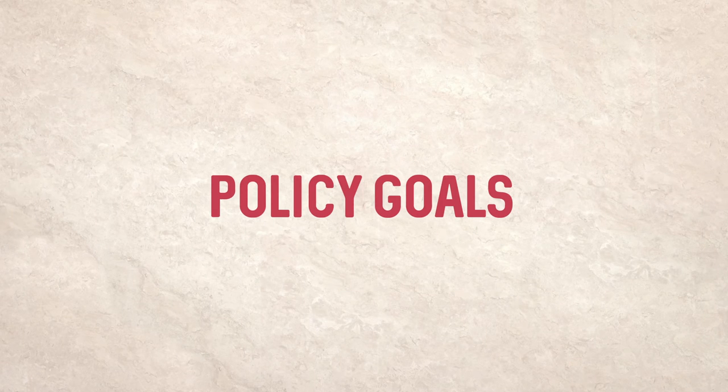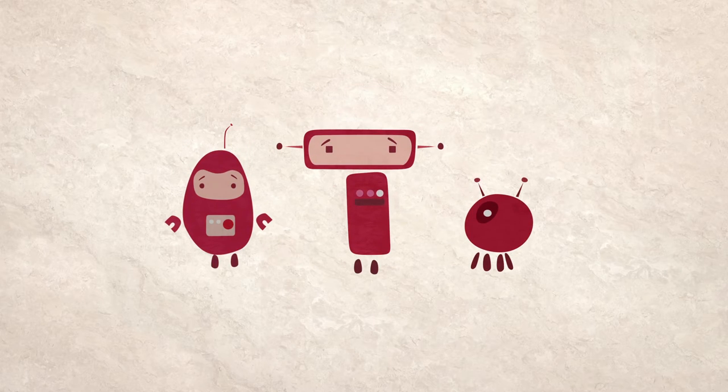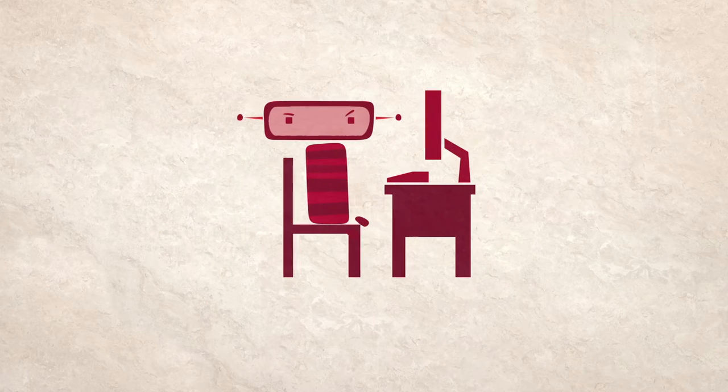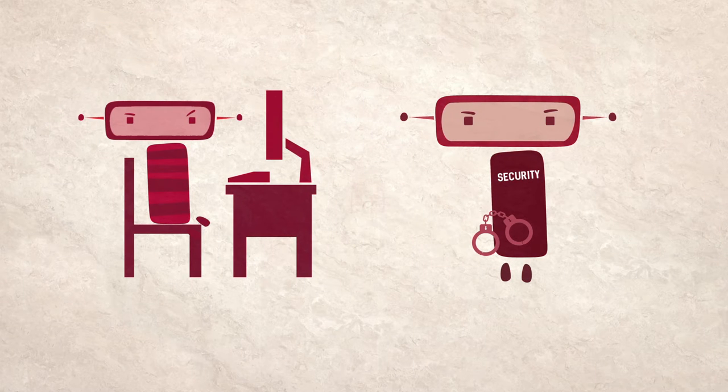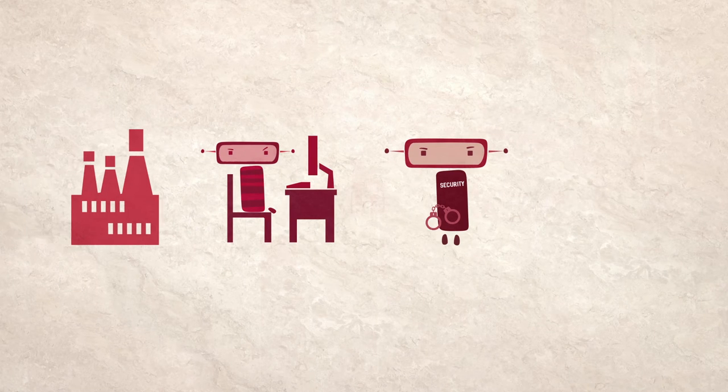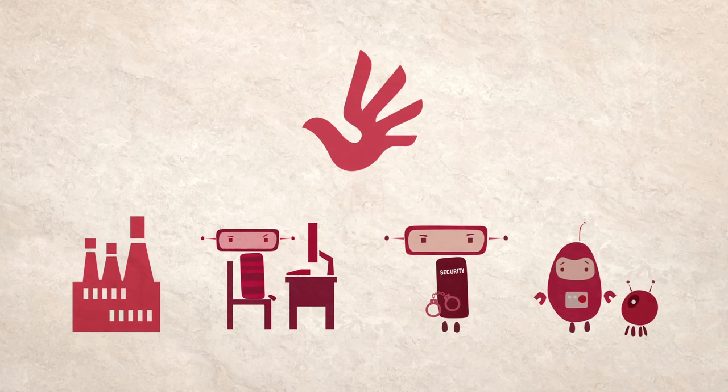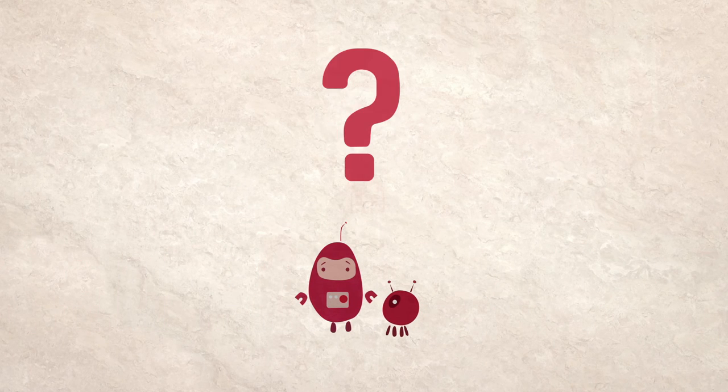The rationale for this approach is that policy issues, particularly those related to cyberspace, have many different dimensions. Take online crime, for example. Here, security agencies are an obvious stakeholder. But this issue also affects businesses and users. And what about the potential human rights implications of the policies or laws which emerge? Shouldn't civil society also be at the table?